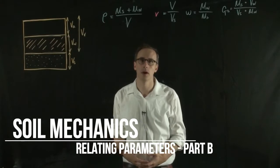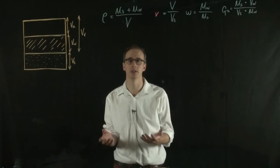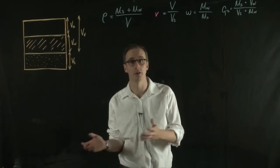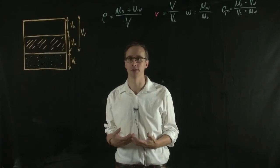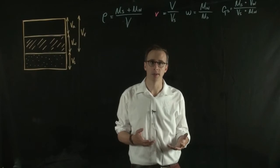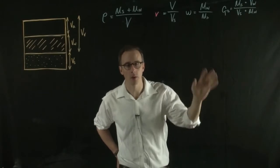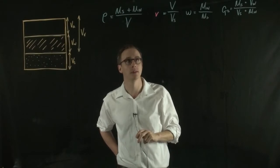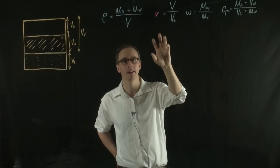We can also relate the parameters that describe the voids within the soil to the bulk density. This is really important when working out what these parameters are in soils because they're particularly hard to measure. It's really hard to measure porosity, void ratio, and specific volume in the lab. It's a lot easier to measure bulk density, water content, and specific gravity, and the equation I'm about to derive relates these to specific volume.